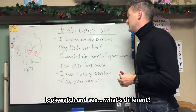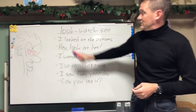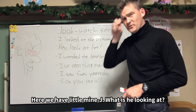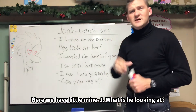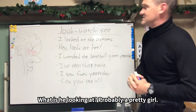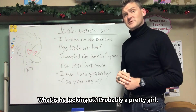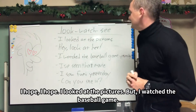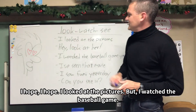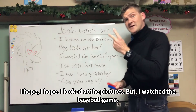What's different, right? Look, watch, and see. So right here we have J — little mini J. What is he looking at? Probably a pretty girl. Here we have: I looked at the pictures.